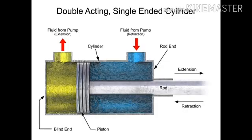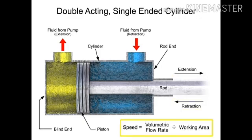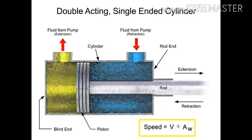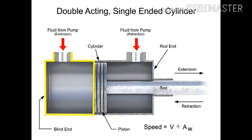The speed at which the piston extends and retracts is calculated using the volumetric flow rate divided by the area for the incoming fluid. Since each side of the cylinder has a different working area, each side experiences a different speed.